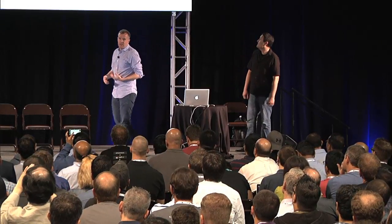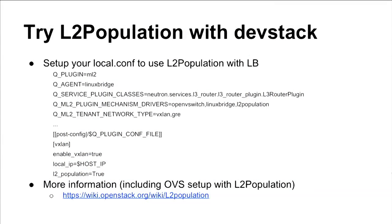To use L2 population with DevStack: set up ML2 with the Linux Bridge agent (it also works with OVS), add service plugin classes for routing, set the mechanism driver to L2 population, and configure your tenant network types. Then in the config file, add vxlan, enable_vxlan=true, specify the local IP of the host for tunnel endpoints, and turn on L2 population. This is one of the ways we've made the reference implementation smarter, but there's still lots of work to be done.